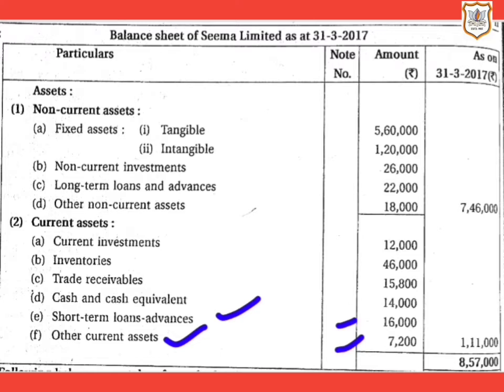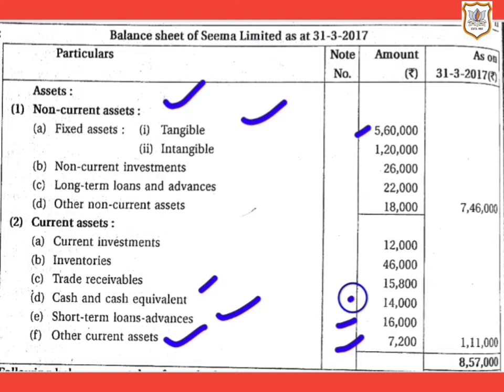Fixed assets that are tangible will come under the main head non-current assets, under the sub-heading fixed assets (tangible), amount is 5 lakh 60,000. Then cash and cash equivalents, amount is 14,000, which is a current asset, so we will show it under the head current assets. Next, inventory is 46,000, shown under current assets.